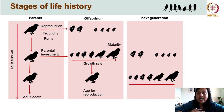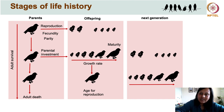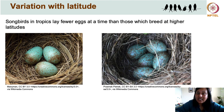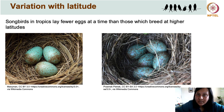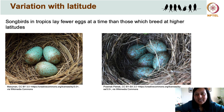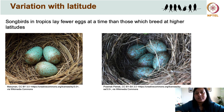As environmental conditions change, we also see variation in these life history strategies. One of the most well-known examples is the variation with latitude in clutch sizes in songbirds. Songbirds belonging to the same species actually lay fewer eggs in the tropics than individuals that breed at higher latitudes, closer to the temperate regions. So why does this happen?